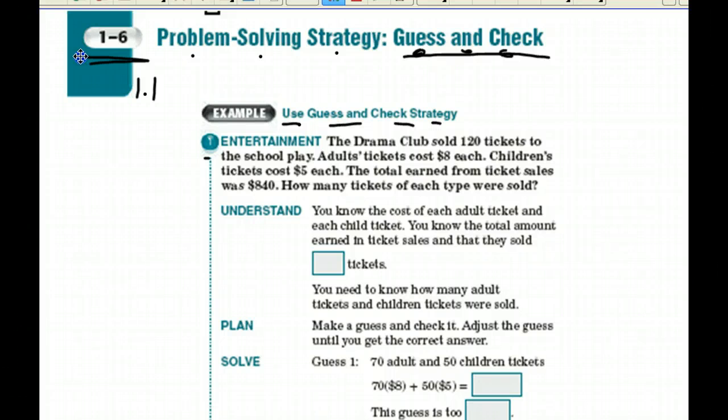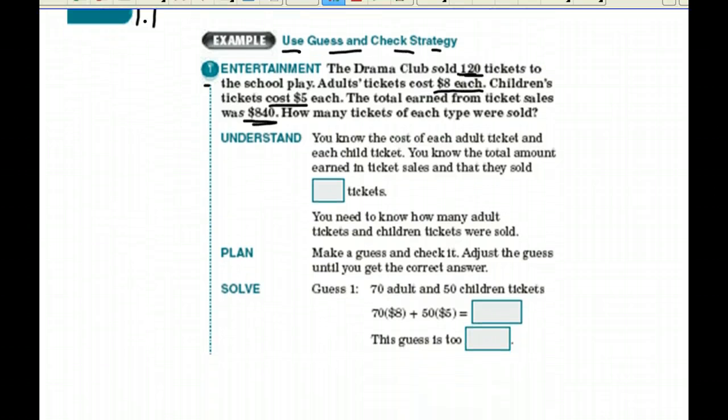Number one, entertainment. The drama club sold 120 tickets to the school play. I'm going to underline 120 because I know I'm probably going to need that. Adults' tickets cost $8 each. I know I'll need that. Children's tickets cost $5 each, and the total earned from ticket sales was $840. How many tickets of each type were sold? That's our question.